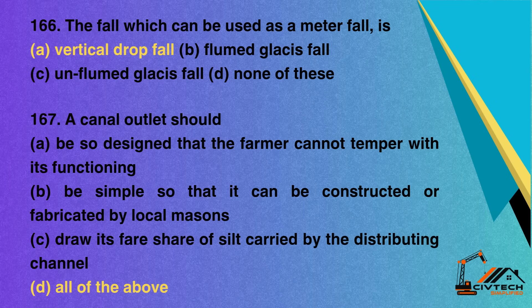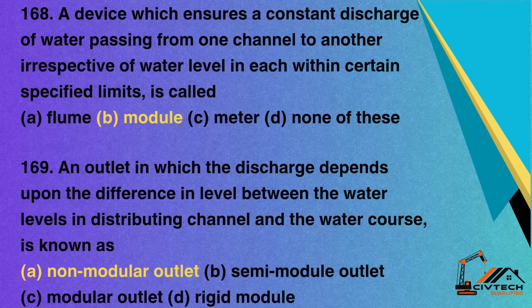Question 167: A canal outlet should — A. Be so designed that the farmer cannot tamper with its functioning; B. Be simple so that it can be constructed or fabricated by local masons; C. Draw its fair share of silt carried by the distributing channel; D. All of the above. Correct option: D. All of the above. Question 168: A device which ensures a constant discharge of water passing from one channel to another, irrespective of water level in each within certain specified limits, is called — A. Flume; B. Module; C. Meter; D. None of these. Correct option: B. Module.